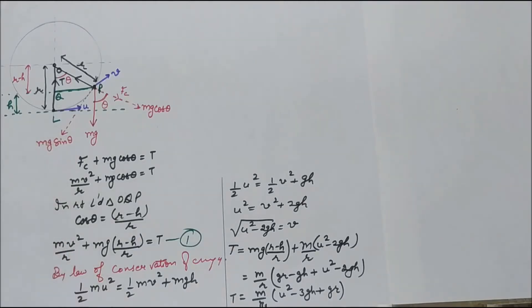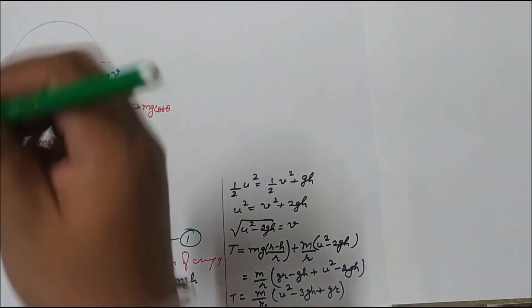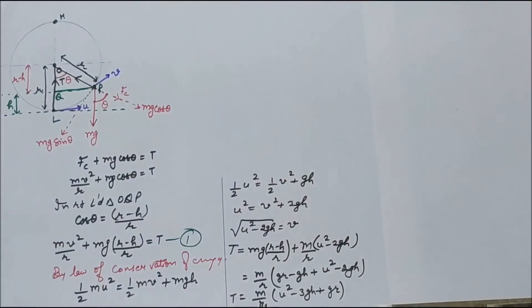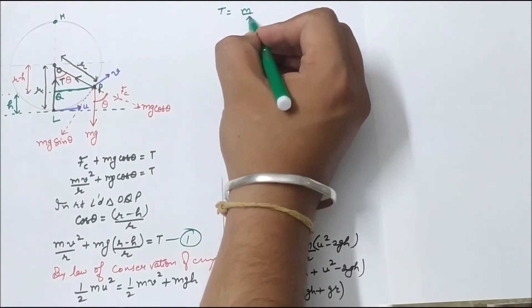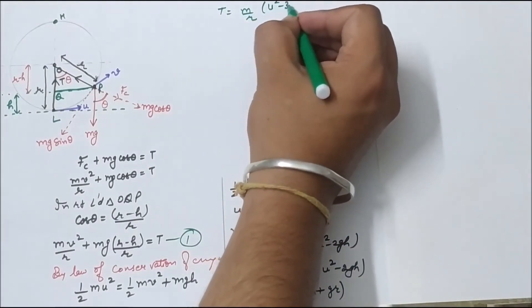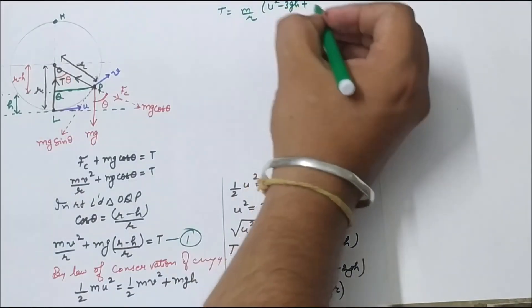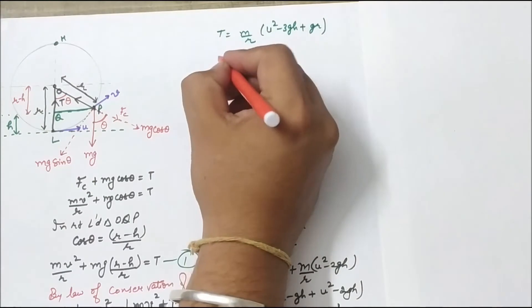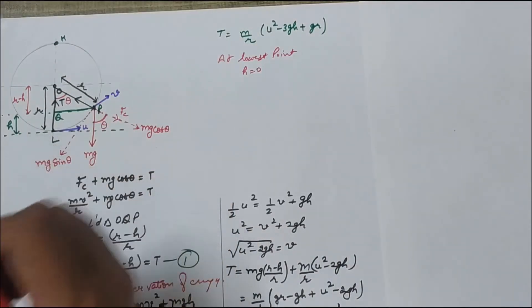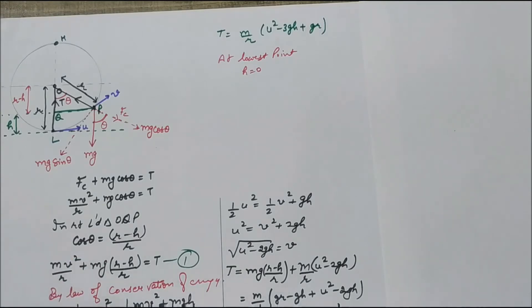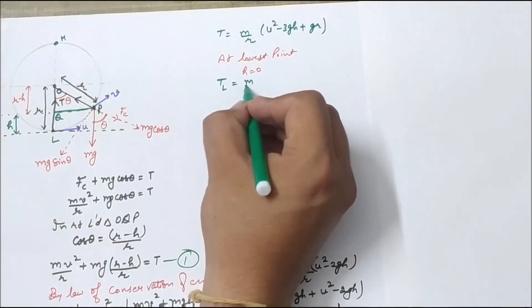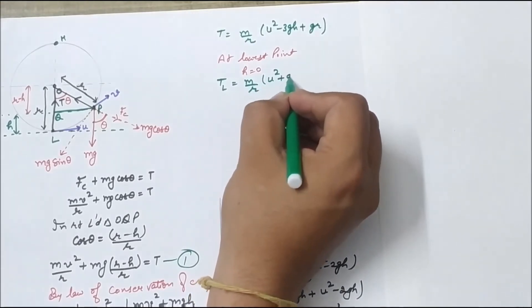Point L is the lowest point of this circular path and point H is the highest point. We evaluate tension at the highest and lowest points using the general equation T equals m upon r times (u² minus 3gh plus gr). At the lowest point L, the value of h is 0. So the tension at the lowest point comes out to be T_L equals m upon r times (u² plus gr).